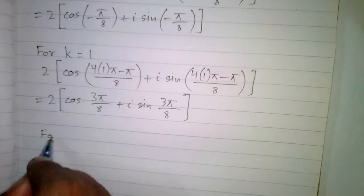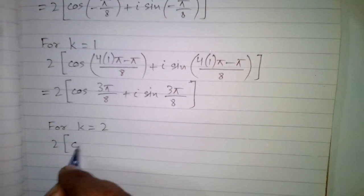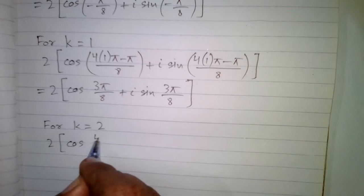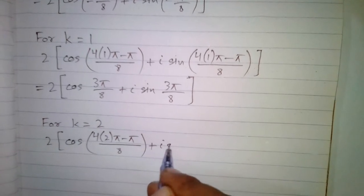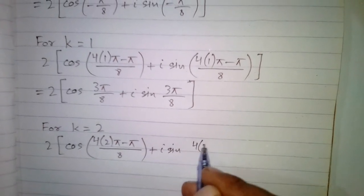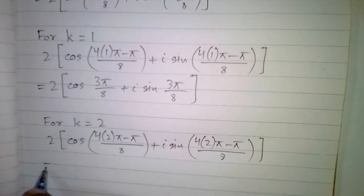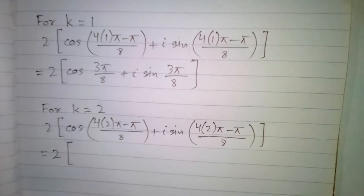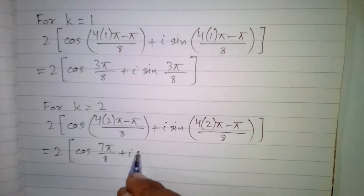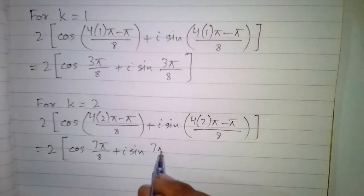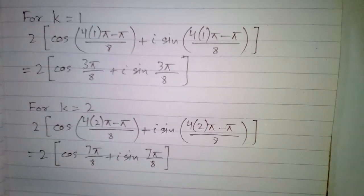For k equal to 2, the fourth root is 2·(cos(4·2·π − π/8) + i·sin(4·2·π − π/8)), which equals 2·(cos(7π/8) + i·sin(7π/8)). These are the four 4th roots of minus 16 iota.